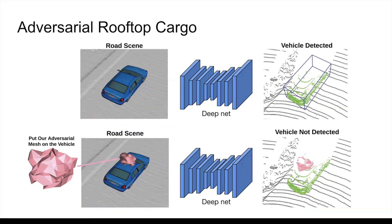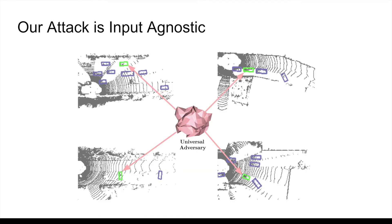In our work, we consider a very realistic vulnerability: adversarial objects in the form of rooftop cargo. By placing a mesh on a vehicle, the vehicle can be consistently hidden from state-of-the-art detectors. Furthermore, the adversary is input-agnostic and can hide any type of vehicle at any location with high probability. Details on how to craft this adversary are provided in our paper.